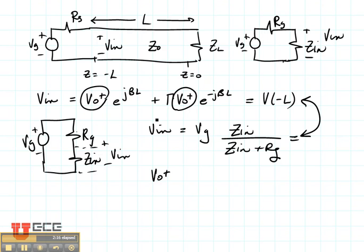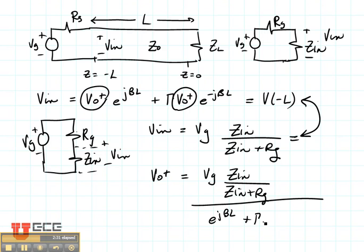V₀⁺ is going to be VG times Z_in over (Z_in plus RG), all divided by (e^(jβL) plus Γe^(-jβL)). So there's an equation for V₀⁺. It gives us a value in volts.